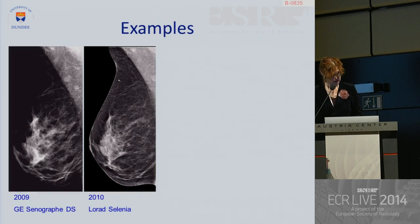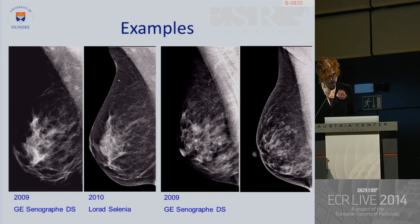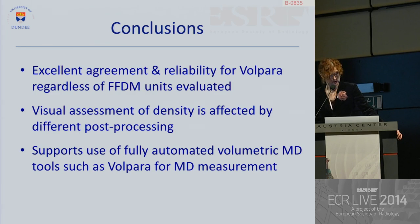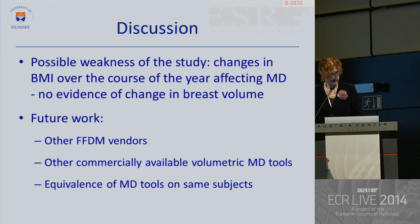Here is just one example where the GE image was read as BIRADS category 2 and the Selenia image as 1, and here BIRADS category 3 on GE and 2 on Selenia. In conclusion, we appear to have excellent agreement and reliability for Volpara regardless of the FFDM vendor unit used. However, visual assessment of density does appear to be affected by differing post-processing, and to my mind, this is yet another good argument to suggest that we should be using fully automated volumetric assessment as opposed to visual assessment.